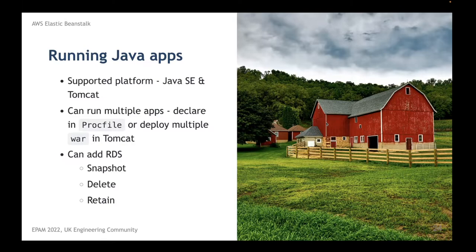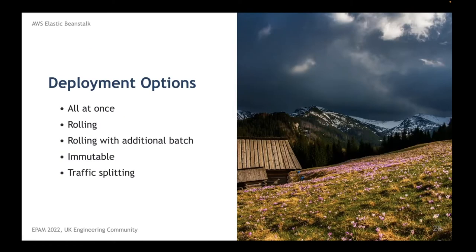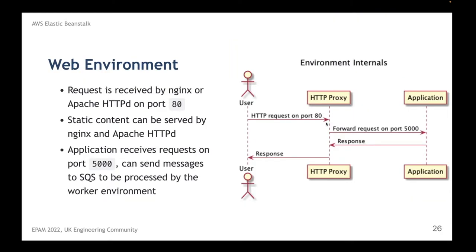Once we start deployment, it's necessary to make releases smooth and avoid downtime. Several deployment options are available: we can deploy a new version to all instances at once, deploy them one by one, introduce an additional batch and replace it in the auto-scaling group, perform blue-green releases with an additional set of instances, or even perform canary releases with traffic splitting.